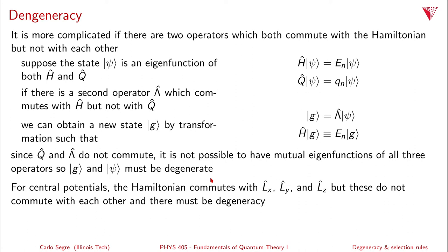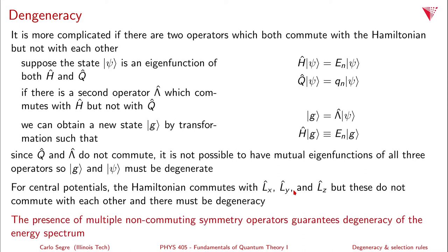For central potentials, the Hamiltonian commutes with L sub x, L sub y, and L sub z, but these three don't commute with each other, and so there must be a degeneracy. That's why we have degeneracy in the angular functions. The presence of multiple non-commuting symmetry operators therefore guarantees a degeneracy of the energy spectrum, which is what we see in many of these systems.